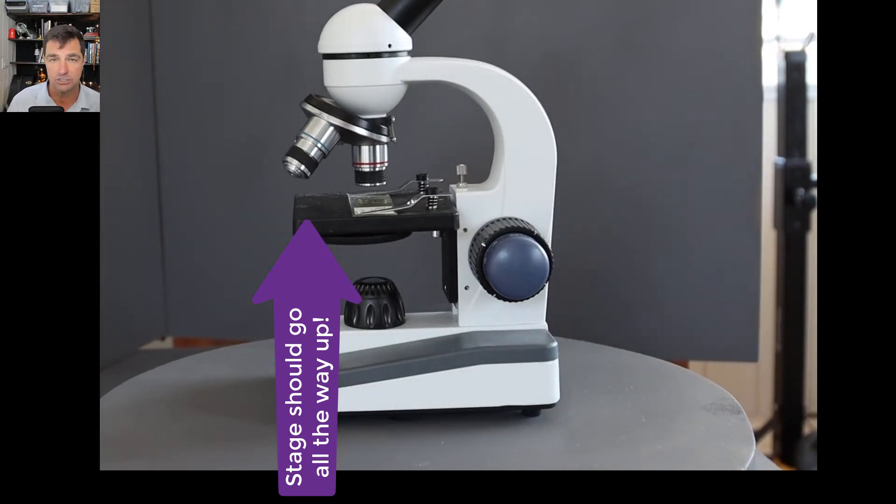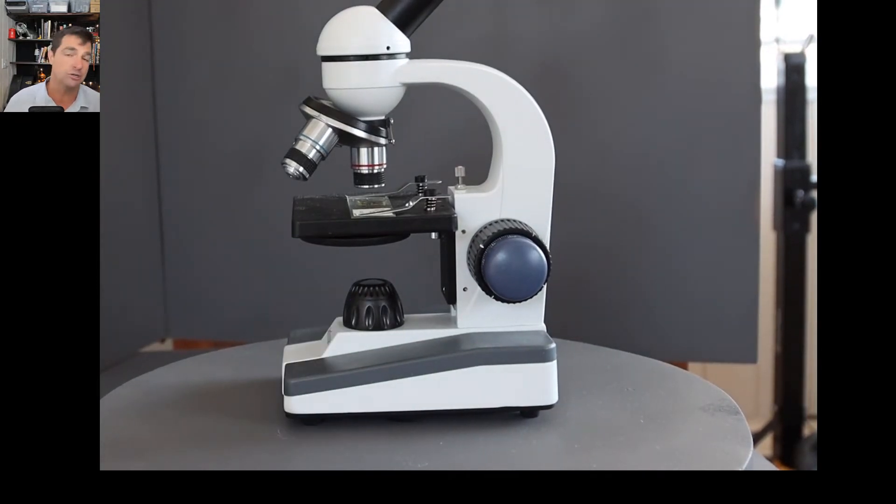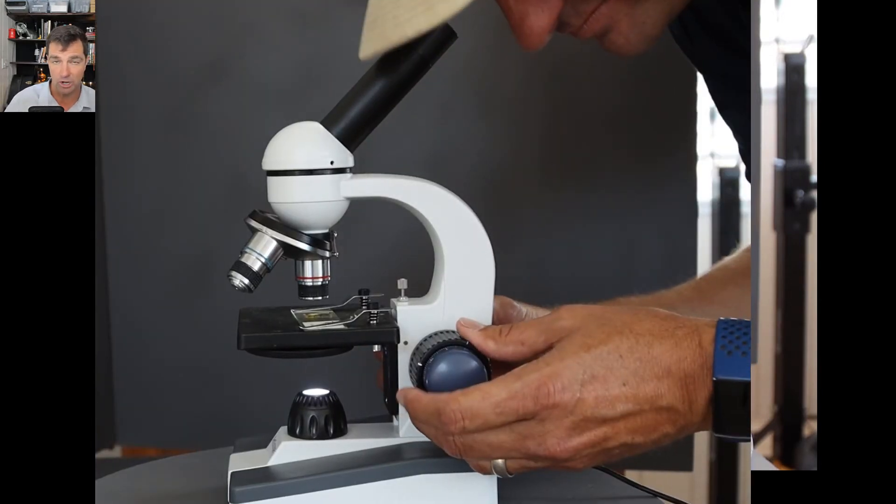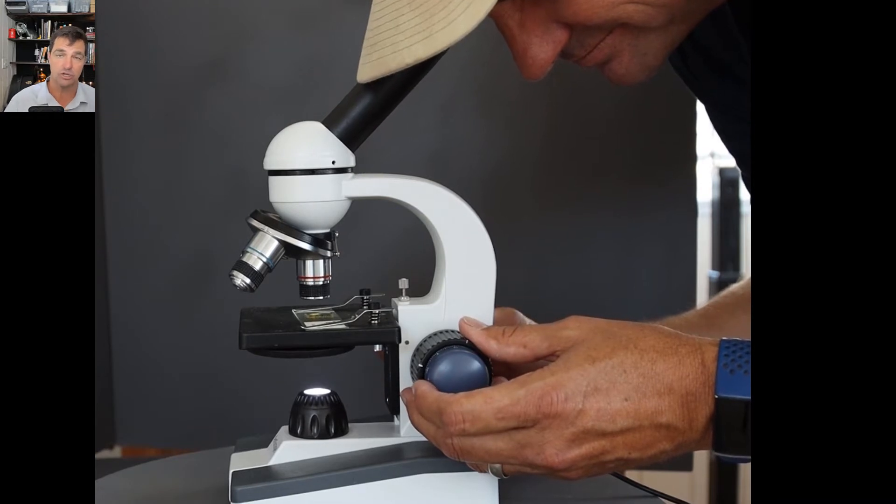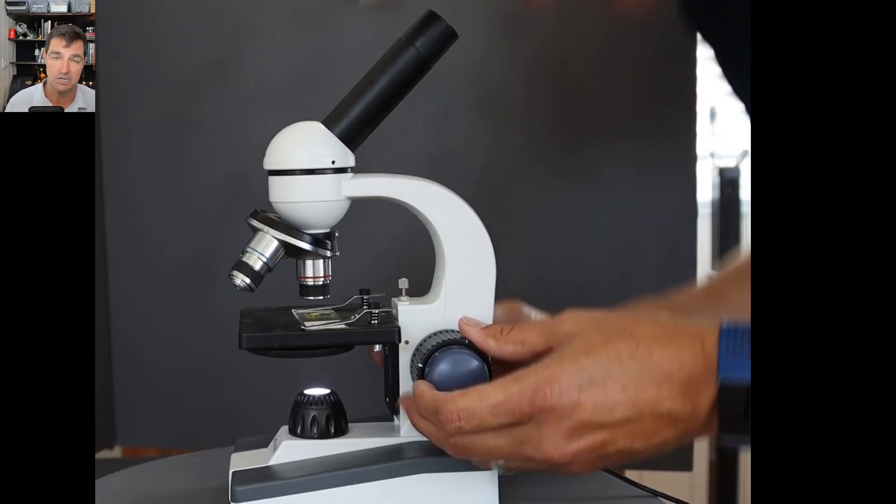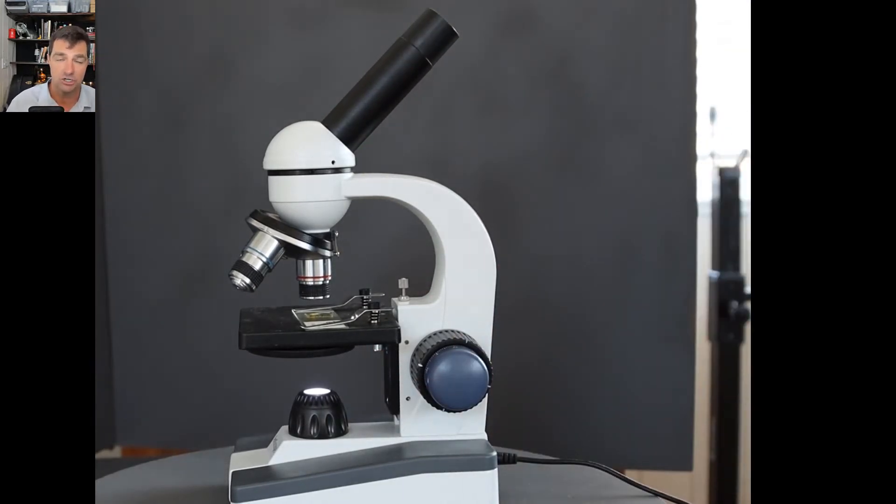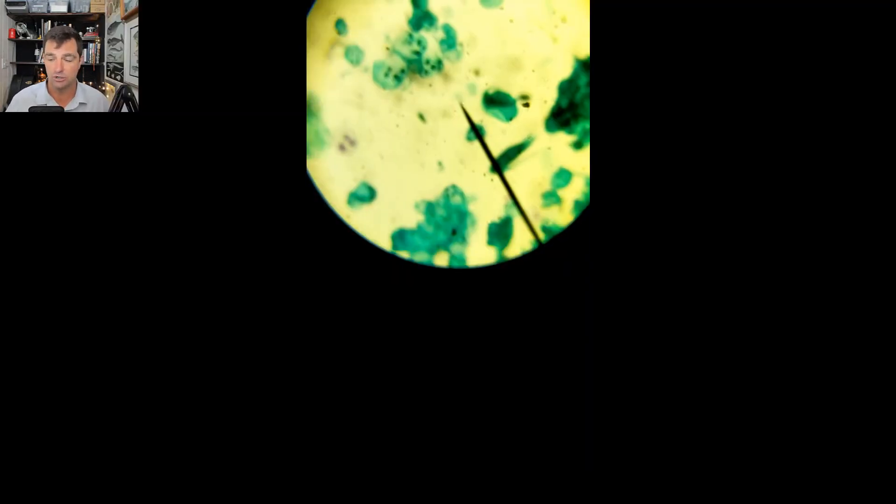Then while you look through the microscope, you'll find you can only turn the course adjustment knob one way, which will move the stage down. Turn that course adjustment knob slowly, and what you're looking at should come into focus.